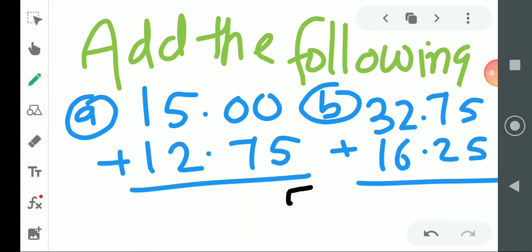See, 5 plus 0 is 5. Next, 7 plus 0 is 7. Keep in mind, point below point, this is very important. Point below point. Then simple addition continues. 5 plus 2 is 7, 1 plus 1 is 2. Your addition is done.